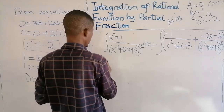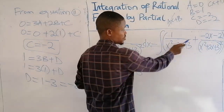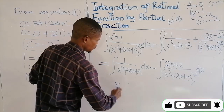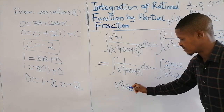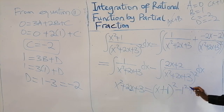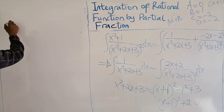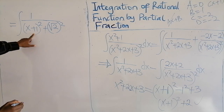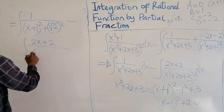The integral of a sum of functions is the integral of each function separately. That gives the integral of 1 over (x² + 2x + 3), minus the integral of (2x + 2) over (x² + 2x + 3) squared. For the first part, there's no table entry directly, so we need to complete the square on the quadratic expression. We get (x + 1)² + 2.